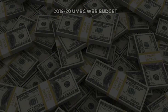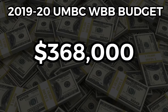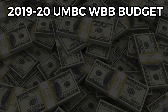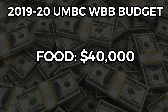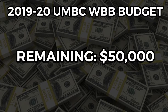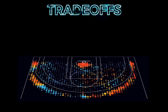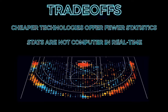During the 2019-2020 season, the UMBC women's basketball team had a total budget of $368,000. Of that amount, nearly $150,000 was allocated towards travel expenses, $50,000 went to paying referees, another $50,000 went towards purchasing new gear and equipment, $40,000 went towards meals and food for the locker room, and $20,000 went towards recruiting expenses. While this leaves approximately $50,000 for miscellaneous expenses like SportsCode and Synergy, it is not nearly enough to afford more advanced technologies like ShotTracker and SportVU. Notably, no team in our division has the budget for more expensive technologies either, so we are not competitively disadvantaged due to our lack of funding.